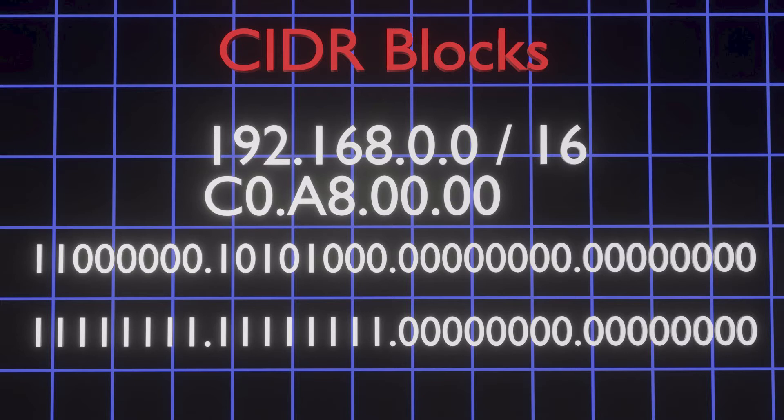So 192.168.0.0/16 means only the first 16 bits, or 2 bytes, of the IP address are significant. Think of the ones in the bit mask as being immutable, while the zeros are free to change value and represent the rest of the usable addresses.